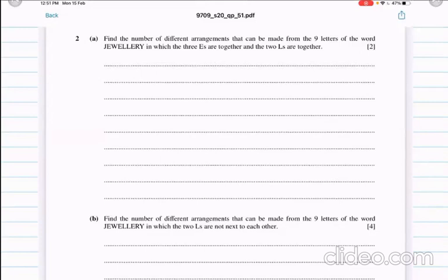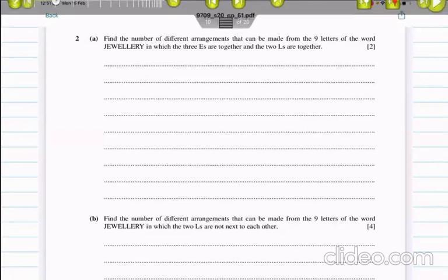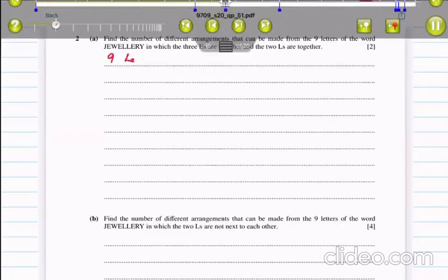If we count the letters in JEWELRY, there are 9 letters. The arrangement of 9 letters will come from 9 factorial, but we are looking at this and some letters are repeated.